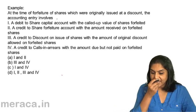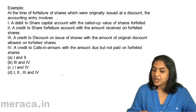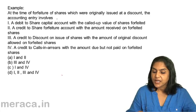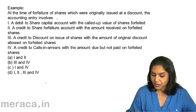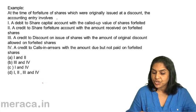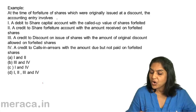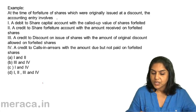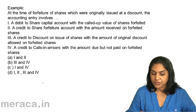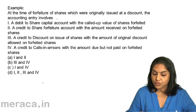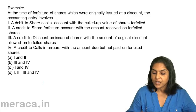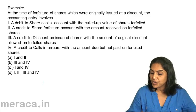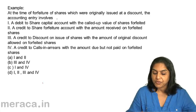Let us take an example. At the time of forfeiture of shares which were originally issued at a discount, the accounting entry involves: 1. A debit to share capital account with the called-up value of shares forfeited. 2. A credit to share forfeiture account with the amount received on forfeited shares. 3. A credit to discount on issue of shares with the amount of original discount allowed on the forfeited shares. 4. A credit to calls in arrears with the amount due but not paid on forfeited shares.